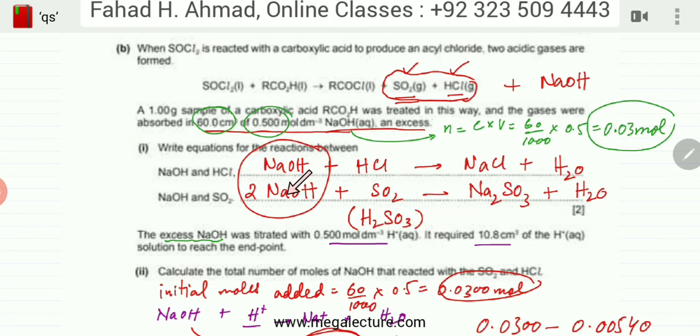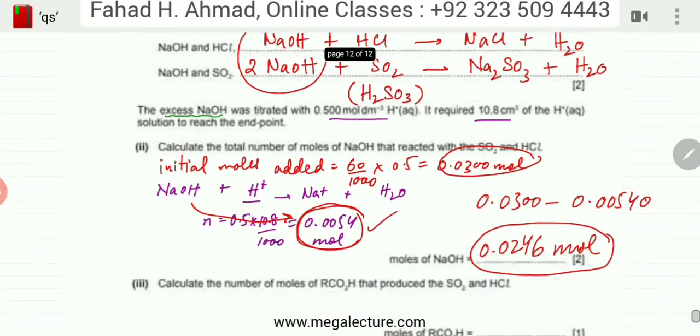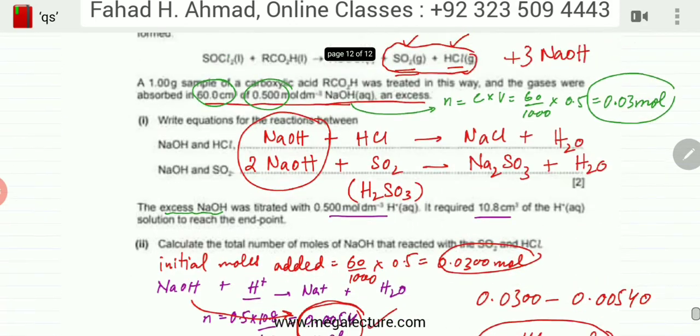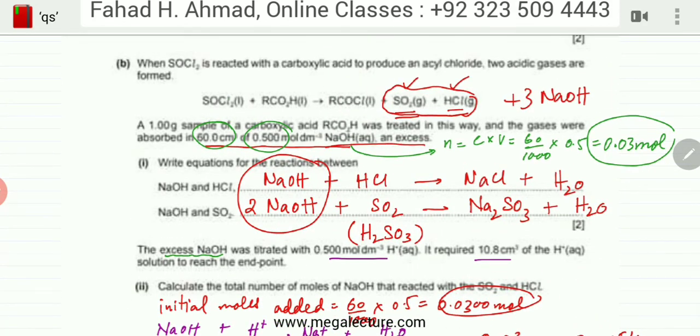What is the total moles of NaOH that were needed? One was required to neutralize the HCl, two were required to neutralize the SO2, so the total amount of NaOH needed was three moles. The moles calculated that took part in the reaction is 0.0246 moles.